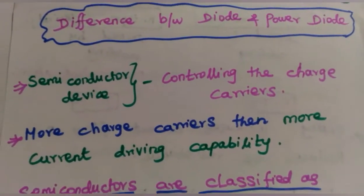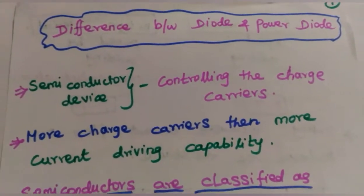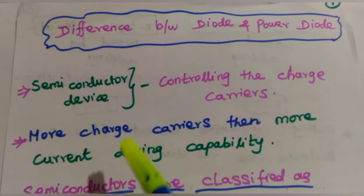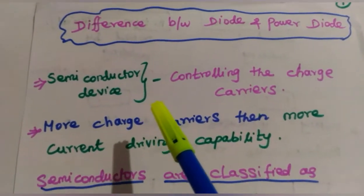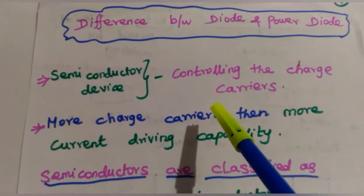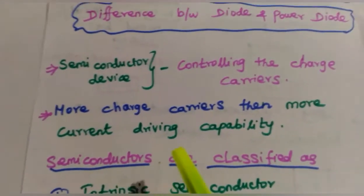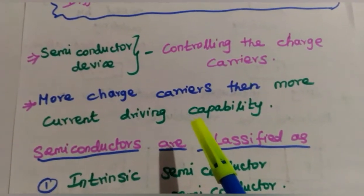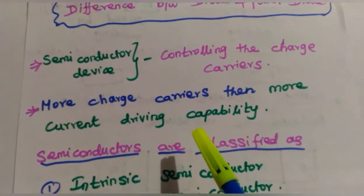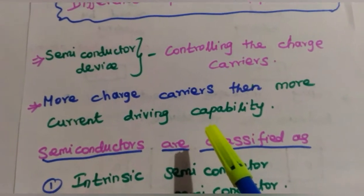Welcome back. In this video, let us see the difference between a diode and a power diode. A semiconductor device is used to control charge carriers. More charge carriers in the semiconductor material means the current-driving capability of that particular semiconductor device will be more.